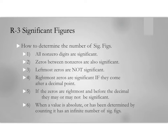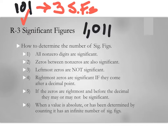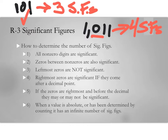Rule two: zeros between non-zeros are also significant. For example, the number 101 — that zero is significant, and it has three significant figures. The number 1,011 has four significant figures, because the zero is between non-zeros and is therefore significant.